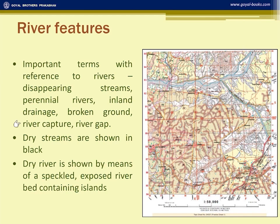River capture and river gap are connected with river erosion but may not be seen in a dry region. Dry streams are all shown in black. All these rivers are dry and shown in black, meaning the whole area gets seasonal rainfall.